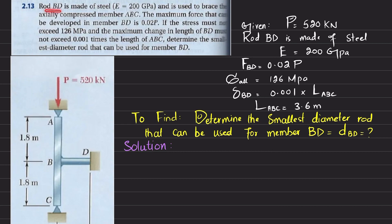The statement is: rod BD is made of steel, E is 200 gigapascal, and is used to brace the axially compressed member ABC. The maximum force that can be developed in member BD is 0.02P, if stress must not exceed 120 megapascal, and the maximum change in length of BD must not exceed 0.001 times the length of ABC. Determine the smallest diameter of rod that can be used for member BD.